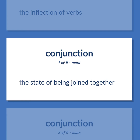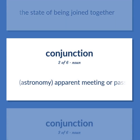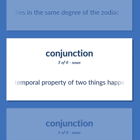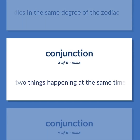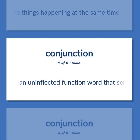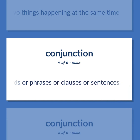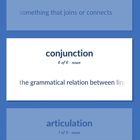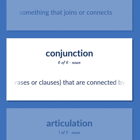Conjunction: The state of being joined together. Astronomy — apparent meeting or passing of two or more celestial bodies in the same degree of the zodiac. The temporal property of two things happening at the same time. An uninflected function word that serves to conjoin words or phrases or clauses or sentences. Something that joins or connects. The grammatical relation between linguistic units — words or phrases or clauses — that are connected by a conjunction.